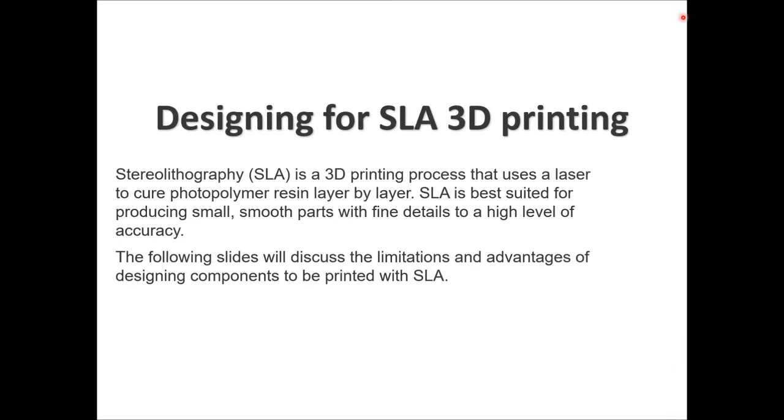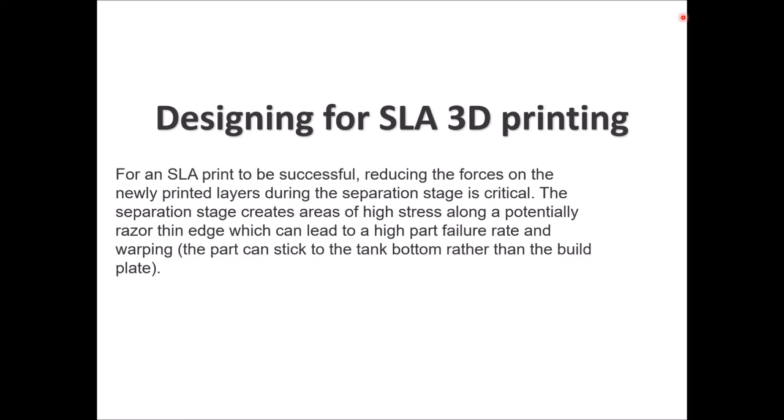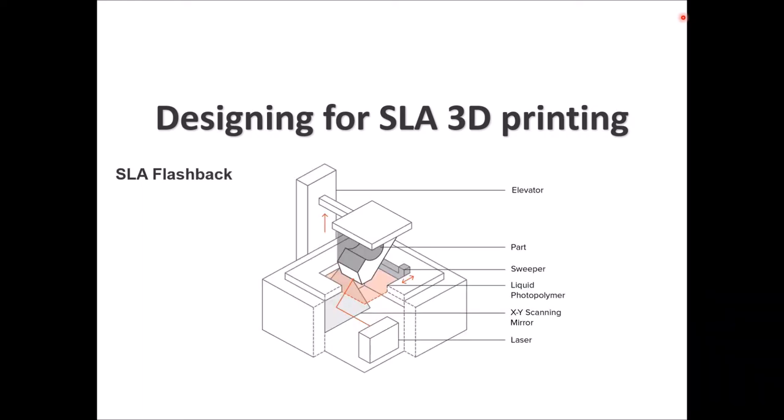Designing for SLA 3D printing: SLA uses a laser to cure photopolymer resin layer by layer. It is suited for producing small, smooth parts with fine details and high accuracy. To have a successful SLA print, you need to reduce forces on newly printed layers, especially during the separation stage, which creates areas of high stress along thin edges, leading to high part failure rates and warping — sometimes the part sticks to the bottom of the tank instead of the build plate.